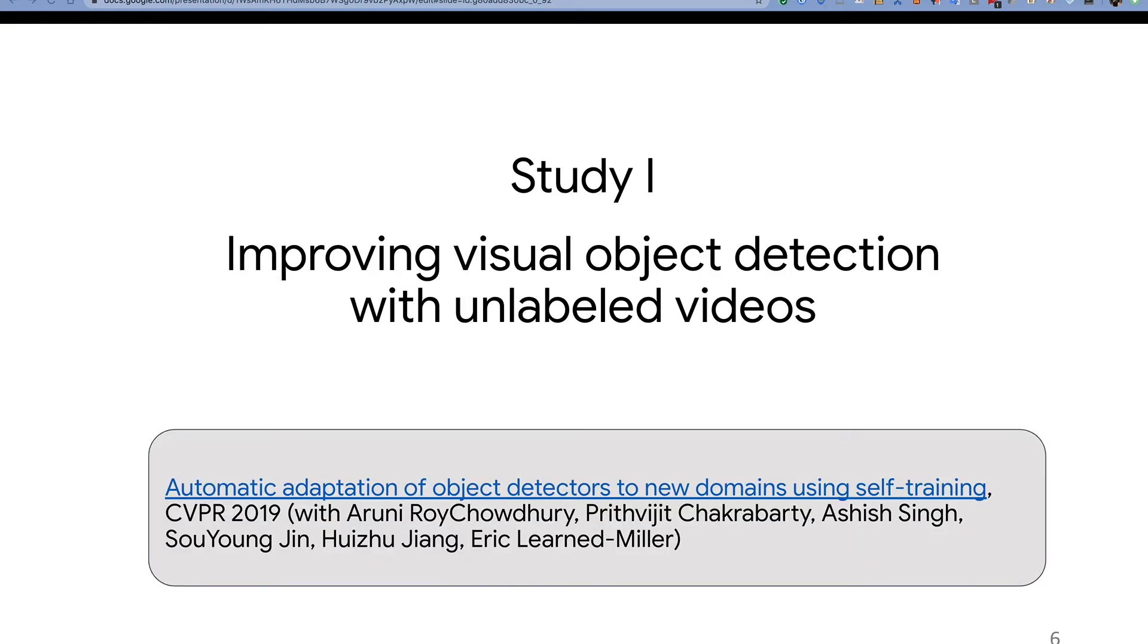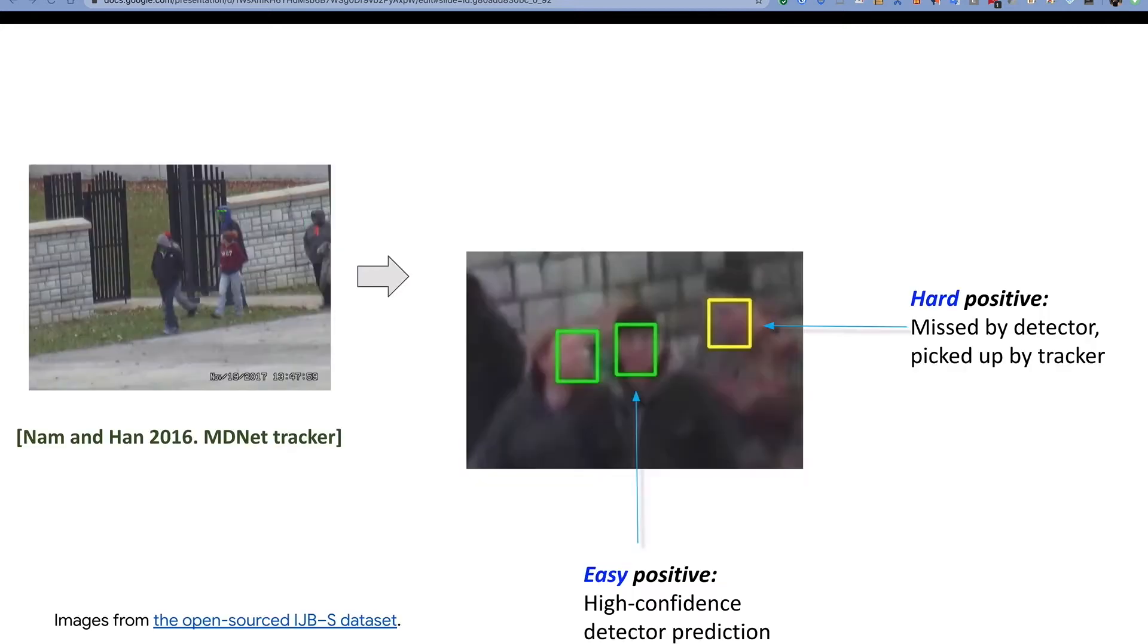The first study is on visual detection. It's based on a paper from CVPR 2019 with my colleagues at UMass. The example video here is taken from the open-source IGBS dataset. Note that all the data here in this study is public. It's not related to Google at all.